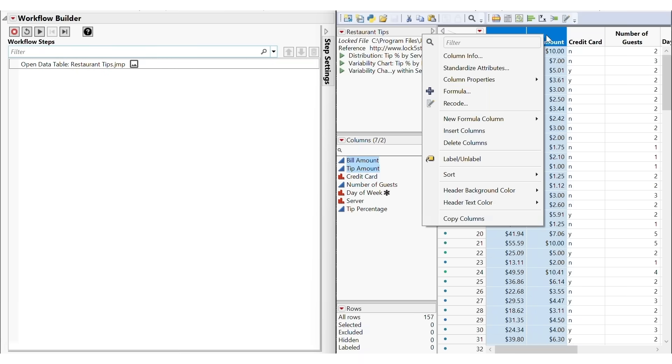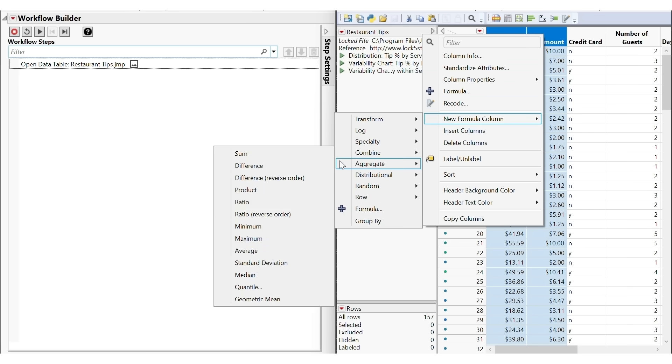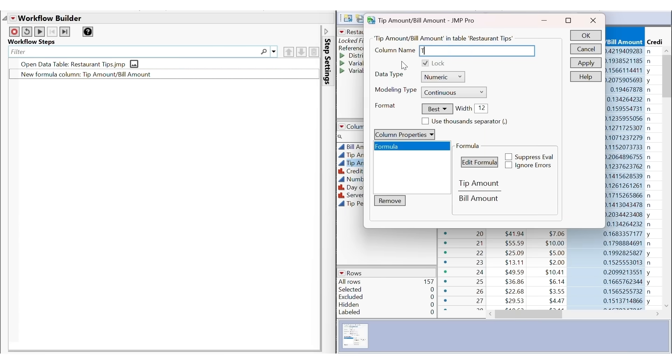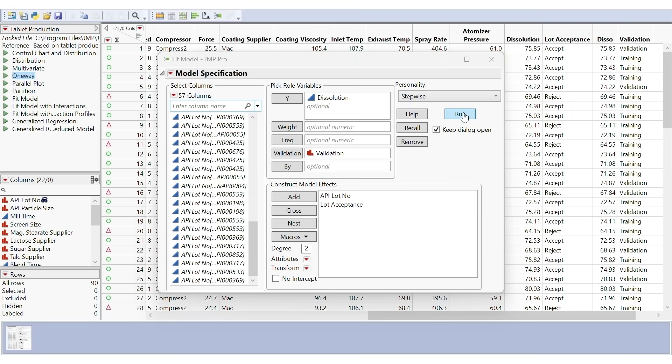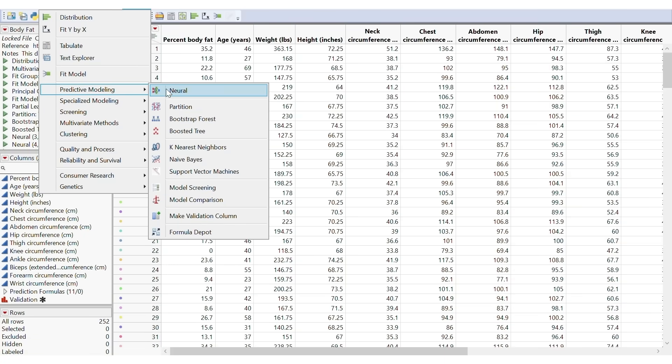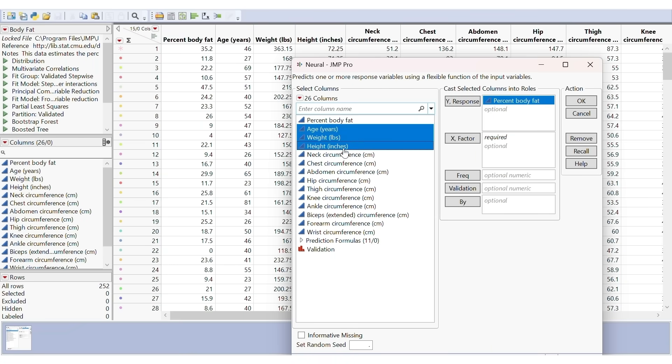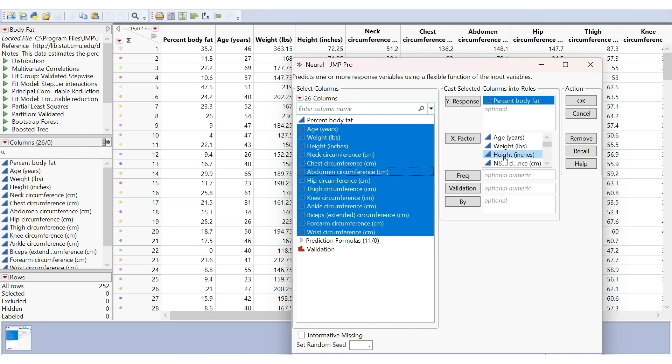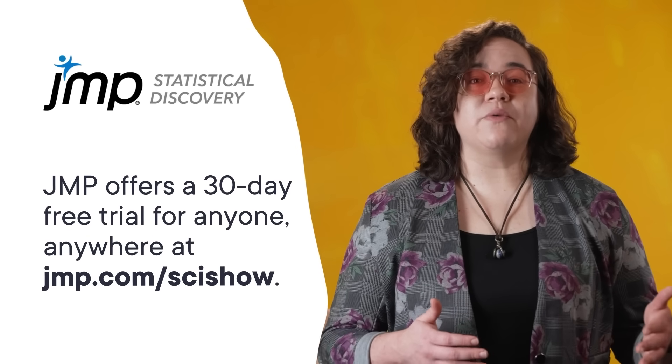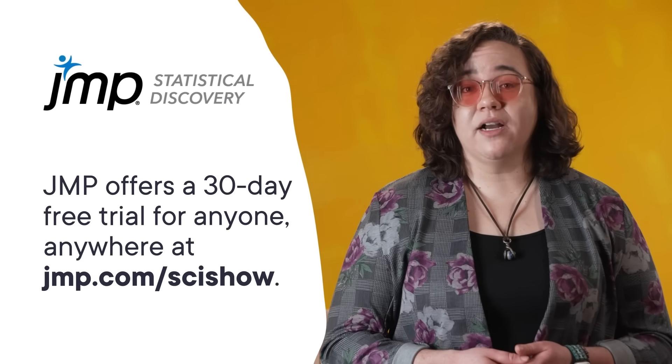Thanks to JUMP for supporting this SciShow video. JUMP is a statistical analysis software that makes powerful analytics quick and accessible. When you have a bunch of engineering data, you need to choose the best model for that data. This requires actively evaluating, validating, and comparing a variety of choices. And JUMP facilitates that process. JUMP's model screening platform lets you launch multiple models at once and evaluate their respective performances without having to go through each one individually. Once you've chosen the right one, JUMP helps you keep measurement bias from interfering with the true data with its measurement systems analysis platform, so you can stick to making decisions based on real conclusions. They also offer a 30-day free trial for anyone, anywhere. You can find it at jmp.com slash SciShow.